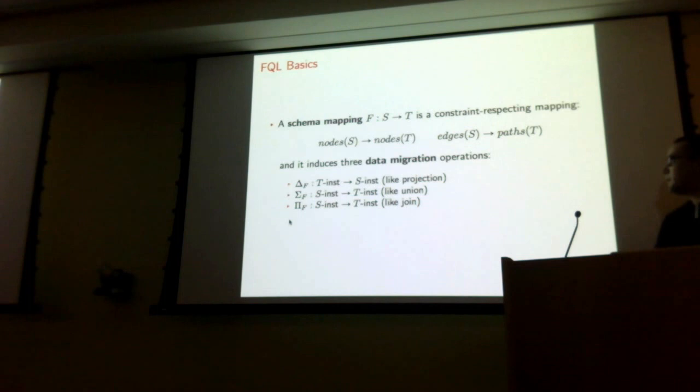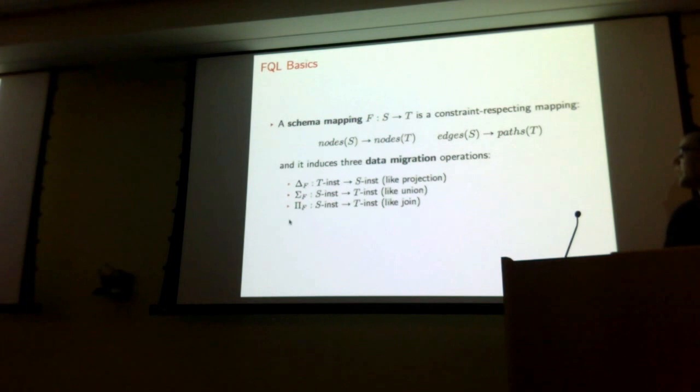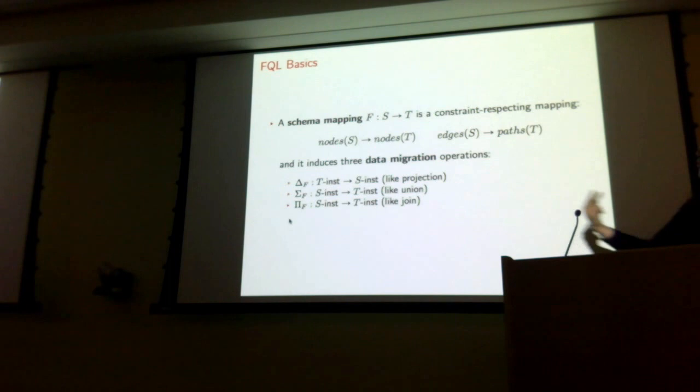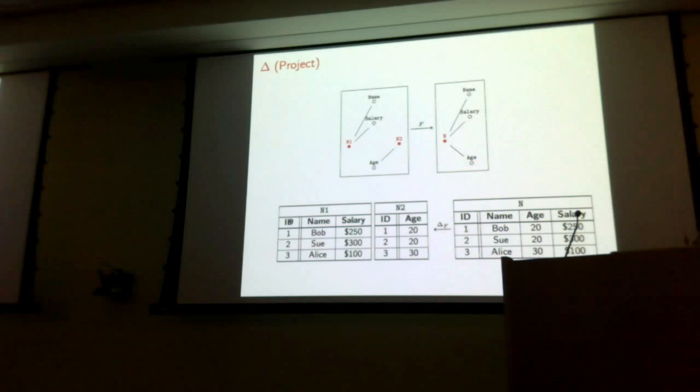FQL is oriented around a thing called a schema mapping, which is a map from one schema to another given by a mapping of nodes to nodes and edges to paths. And for each schema mapping S to T, FQL gives you three data migration operations. One that we call delta, which takes instances on schema T, and I'm going to illustrate these with examples rather than define them formally.